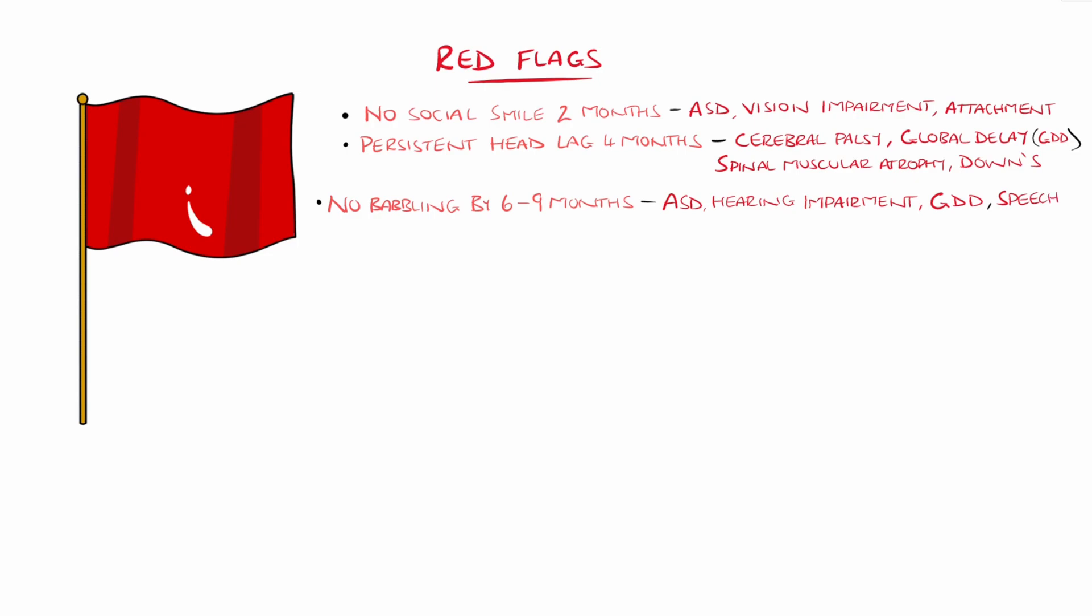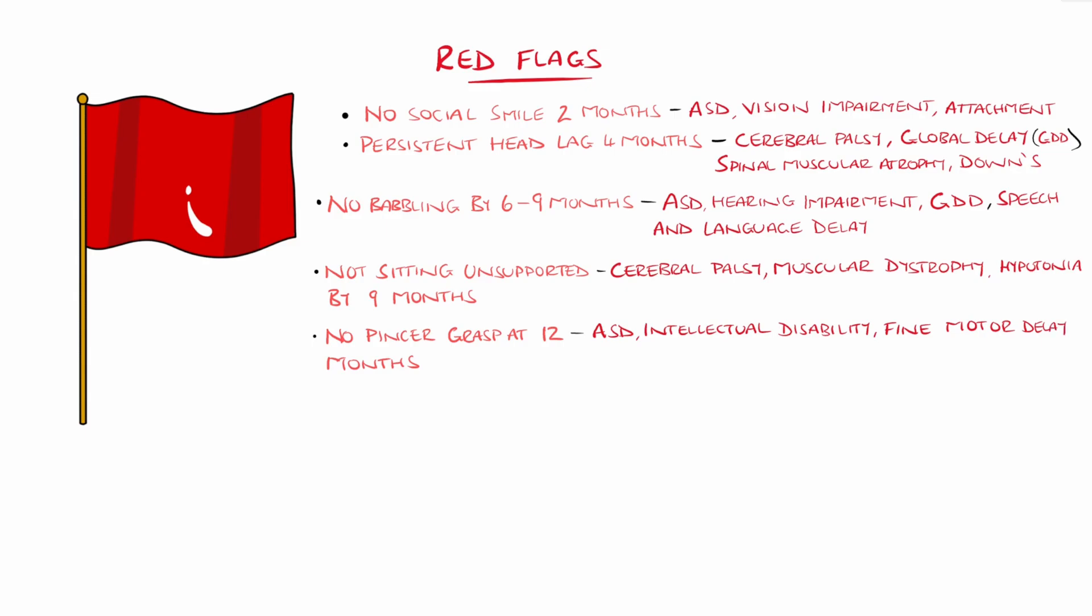Not sitting unsupported by nine months can be suggestive of cerebral palsy, muscular dystrophy, global developmental delay, or even metabolic or genetic hypertonia. If there is no pincer grasp by 12 months, this can suggest intellectual disability, fine motor delay, ASD, and neuromuscular disorders. Not walking by 18 months can indicate cerebral palsy, Duchenne muscular dystrophy,